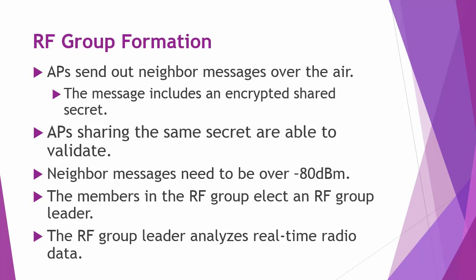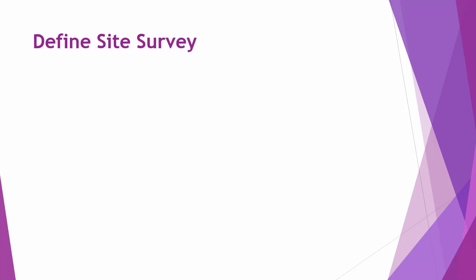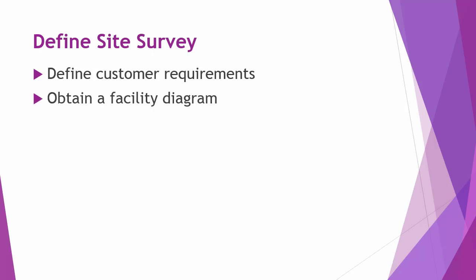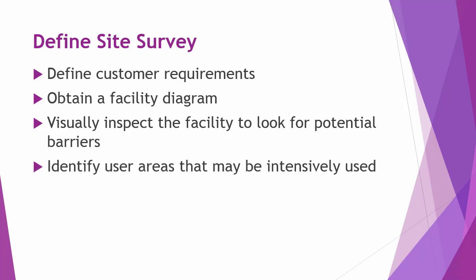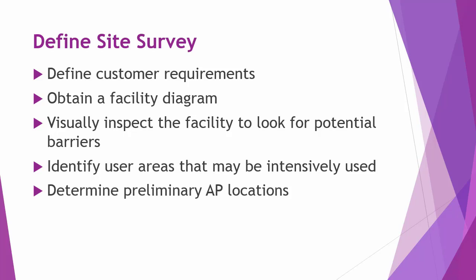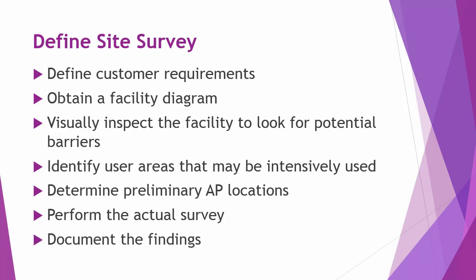RF surveys are done to determine design parameters for wireless LANs and customer requirements. RF site surveys help determine coverage areas and check for RF interference, helping determine appropriate AP placement. The RF site survey steps are: define customer requirements such as service levels and VoIP support; determine devices to support; obtain a facility diagram to identify potential RF obstacles; visually inspect the facility for barriers to RF signal propagation; identify intensively used areas such as conference rooms and lightly used areas such as stairwells; and determine preliminary AP locations considering power, wired network access, cell coverage and overlap, channel selection, mounting locations, and antennas.